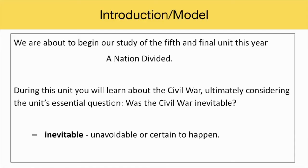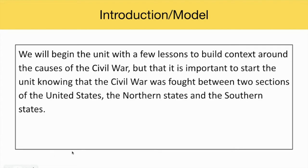For the introduction and model slides, I'll share with students that we are about to begin our study of the fifth and final unit this year on A Nation Divided. I'll share with them that during this unit, you will learn about the Civil War, ultimately considering the unit's essential question — Was the Civil War inevitable? — which you'll have a chance to answer at the end of this lesson for the wrap-up. I'll also share with them the term inevitable, which means unavoidable or certain to happen. I'll share with students that we will begin the unit with a few lessons to build context around the causes of the Civil War, but that it is important to start the unit knowing that the Civil War was fought between two sections of the United States: the Northern States and the Southern States.